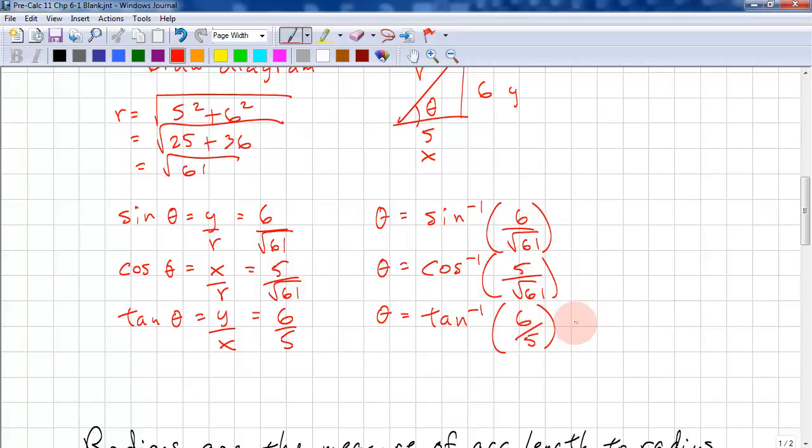All of these will give us approximately 50.2 degrees. And if you were to use the radian mode, you would get 0.876 radians.